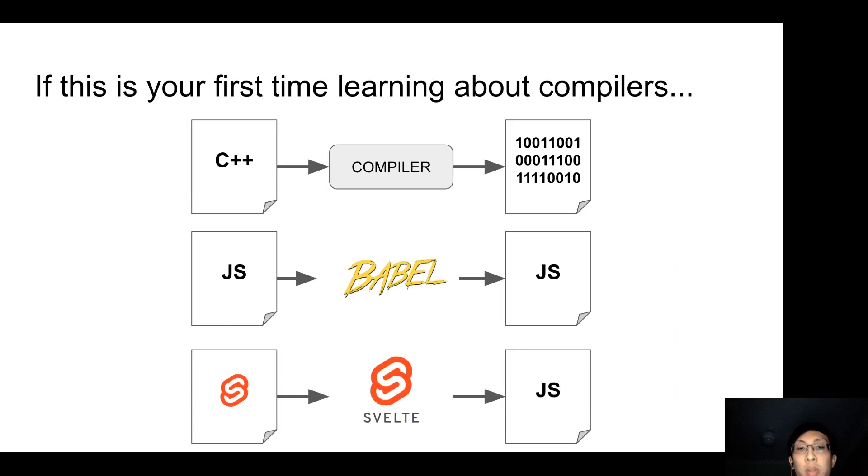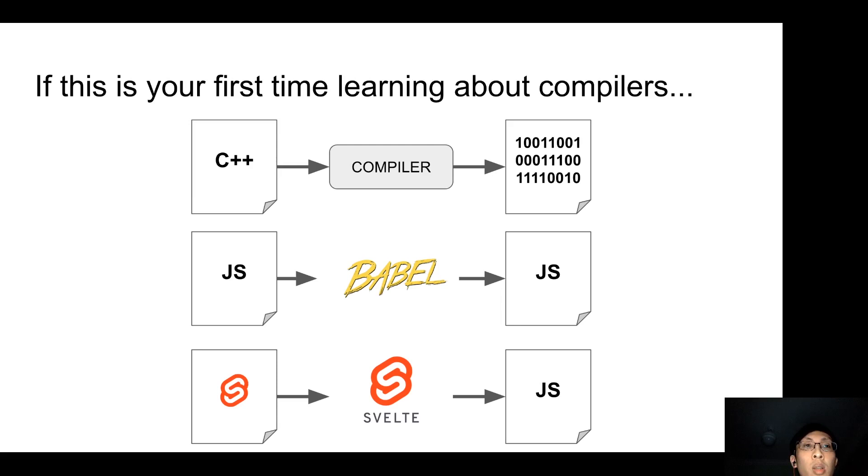And lastly is Svelte. Svelte compiles Svelte component into JavaScript code. So let's talk a bit more on how does a compiler work.